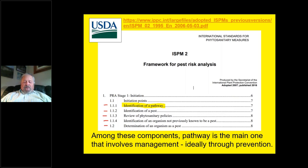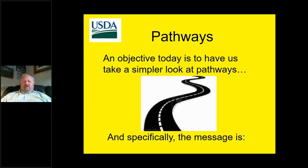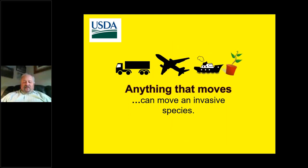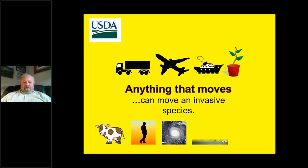Looking at pathways themselves, the message is: anything that moves can move an invasive species. Conveyances of various sorts are prime methods of movement. Live plants can be a tremendously important pathway for moving plant pests. But you also have things like livestock, human-aided movement, wind, water, and wildlife. Anything that moves can move an invasive species.